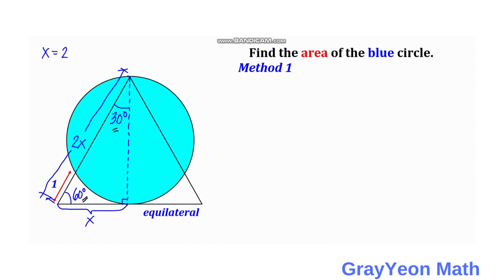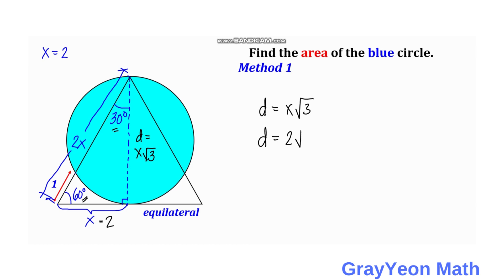Next, we use the properties of a 30-60-90 triangle. If we have this side opposite the 30-degree angle equal to 2, then this side opposite the 60-degree angle is actually x times the square root of 3. So let us call this the diameter. So d is equal to x√3, which gives d is equal to 2√3.